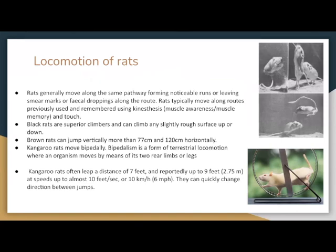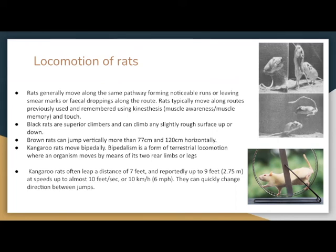Locomotion of rats. Rats generally move along the same pathways, forming noticeable runs or leaving smear marks or fecal droppings along the route. Rats typically remember these routes using kinesthesis — muscle awareness or muscle memory — and touch. Black rats are superior climbers and can climb any slightly rough surface. Brown rats can jump vertically more than 77 centimeters and 120 centimeters horizontally. Kangaroo rats move bipedally, often leaping a distance of seven feet and reportedly up to nine feet (2.75 meters) at speeds up to 10 feet per second, and can quickly change directions between jumps.